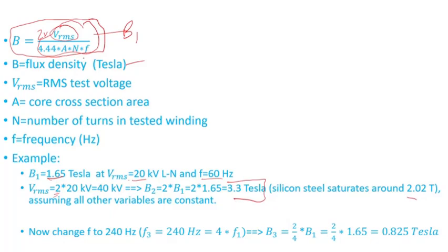...and the frequency—the only thing in this hypothetical example that I changed from B₁ to B₂ is the voltage. Now, in addition to the voltage, let's change the frequency from 60 Hertz to 240 Hertz. So f₃ is equal to 240 Hertz, which is four times f₁.